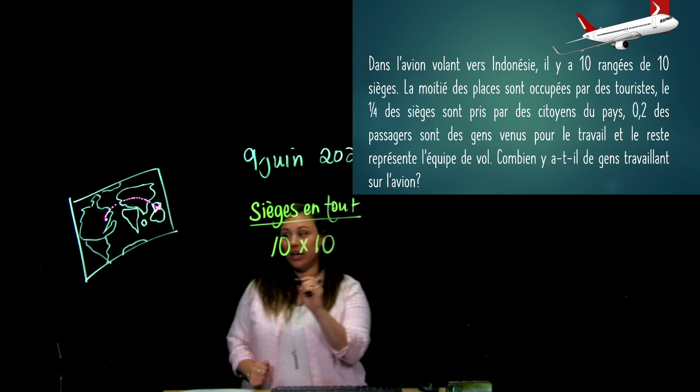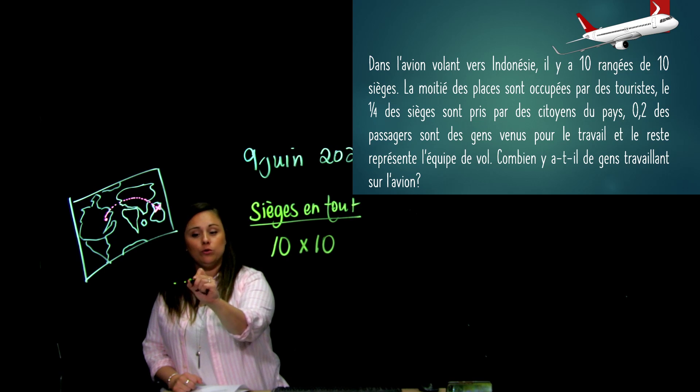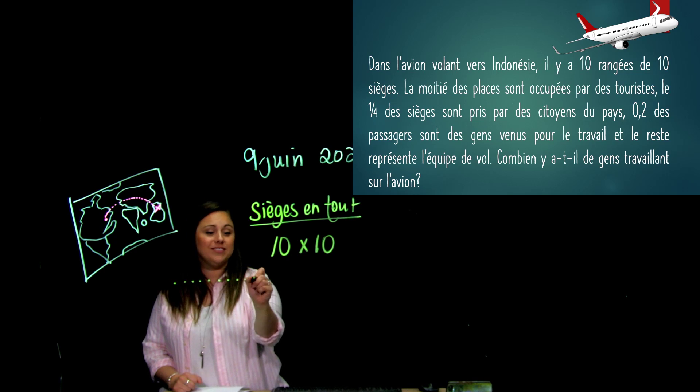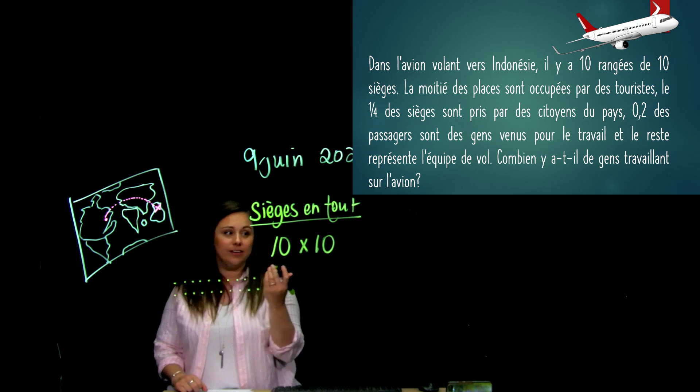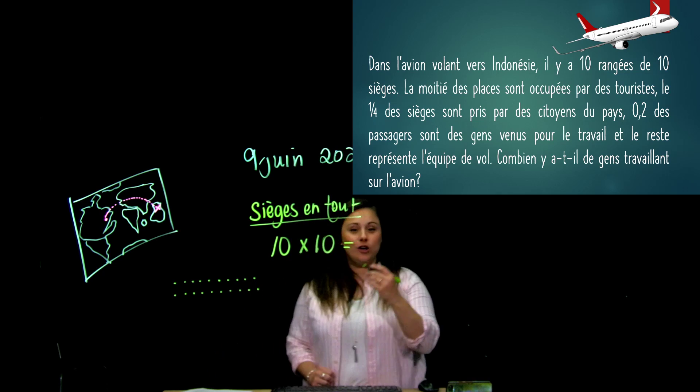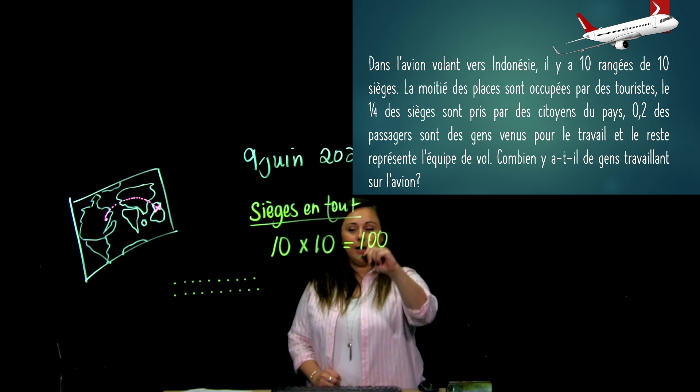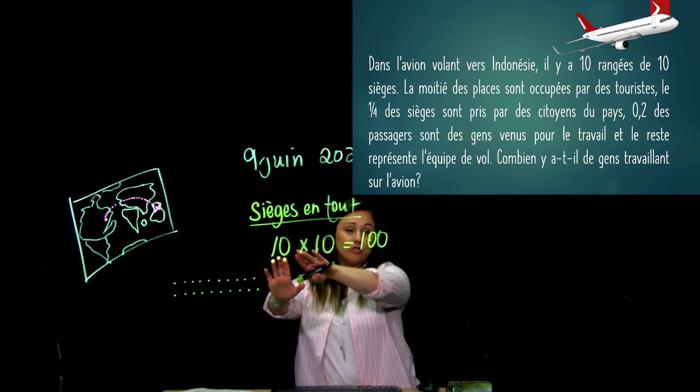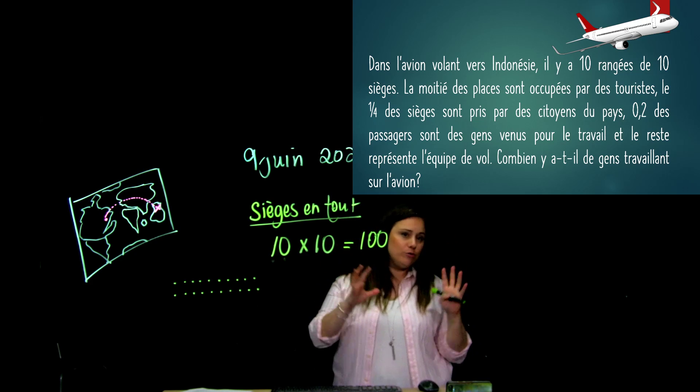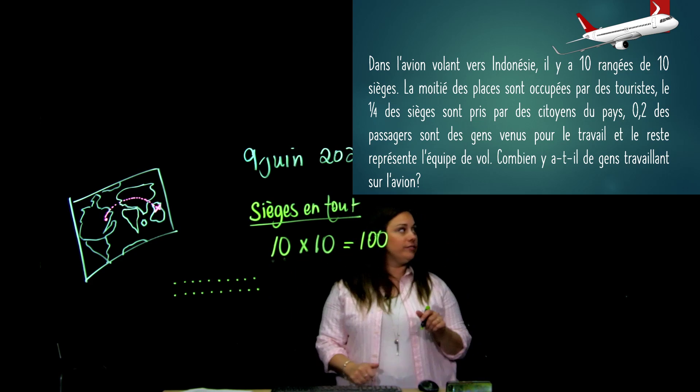La première chose que je veux savoir, c'est combien que j'utilise en tout. Et quand je fais mes démarches, j'oublie pas d'aller identifier mes calculs. Ça, je le répéterai jamais assez. Parce que je suis pas dans ta tête et c'est difficile pour ton enseignant de voir qu'est-ce que t'as fait comme calcul. Sièges en tout, alors, c'est 10 rangées de 10 sièges. Tu peux les dessiner, mais 10 fois 10, c'est 100. Pas besoin de calculer nécessairement mentalement.